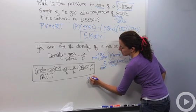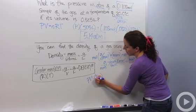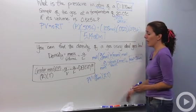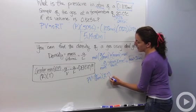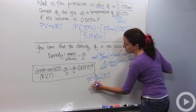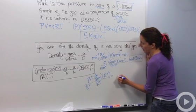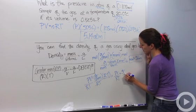So now I have pressure times volume equals grams per molar mass times RT. I want to get it so it's grams per liter, because that's our density value. So I'm going to divide both sides by RT to isolate the grams. So those cross out, and I now have PV over RT equals grams per molar mass.